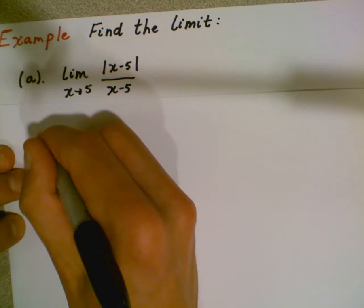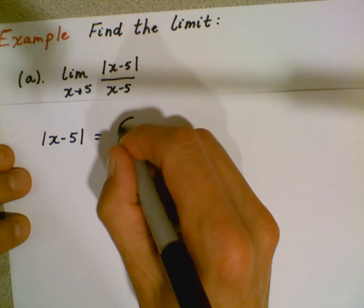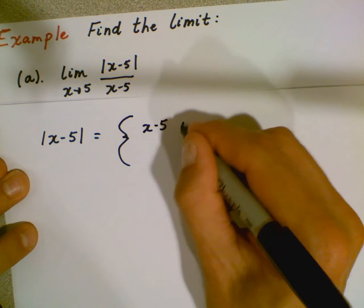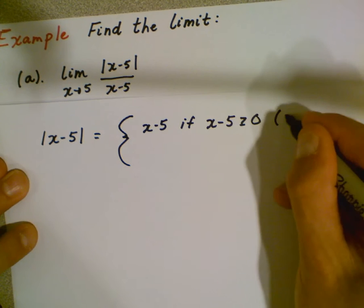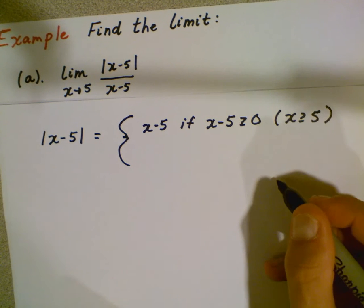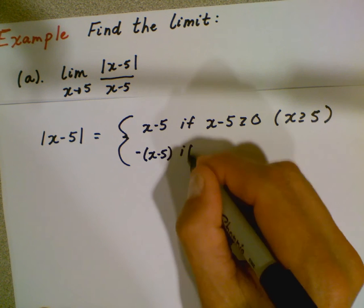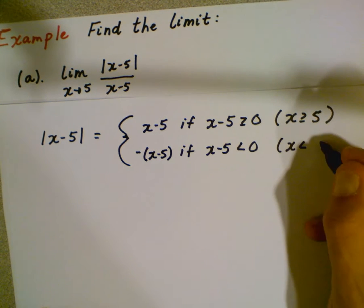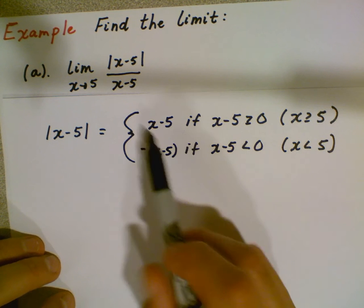So let's go back and think about what the definition of the absolute value of x minus 5 means. It means that it's going to be x minus 5 if x minus 5 is greater than or equal to 0, which means that x is going to be greater than or equal to 5. And the other definition we have to look at is the opposite of x minus 5 if x minus 5 is less than 0, meaning x is less than 5. That's our definition of this absolute value.